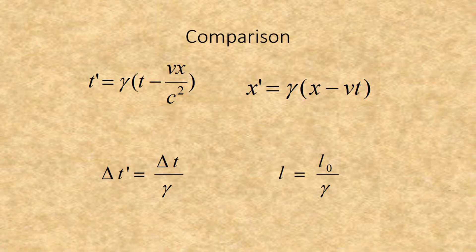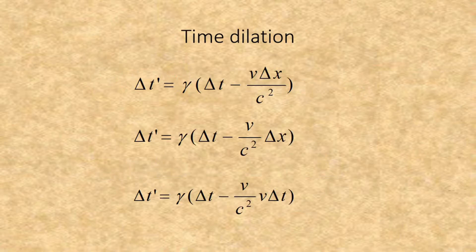A casual comparison with the Lorentz transformation formulas shows an apparent problem — after all, they seem to be opposites. However, it turns out that both formulas derive right from the Lorentz transformations. Starting with time dilation, we need to remember that time dilation is about the change in time, where the Lorentz transformation is between moments in time.